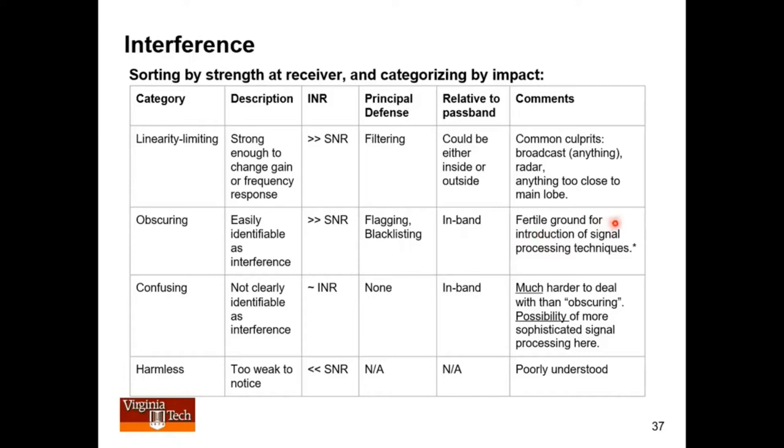It's a fertile ground for the introduction of new signal processing techniques. Me personally, I spend a lot of time thinking about this problem. Making headway in this is very, very difficult for a whole bunch of reasons. Third category is confusing interference. By confusing, I mean it's hard to tell whether it's interference or what you're looking for. This accounts for a lot of headaches. Of course, this means that the interference-to-noise ratio has turned out to be, at the end of the observation, comparable to the signal-to-noise ratio. So you don't know whether you're looking at actual source or interference. There's no defense for this because you can't tell what happened, until you get to very sophisticated things.